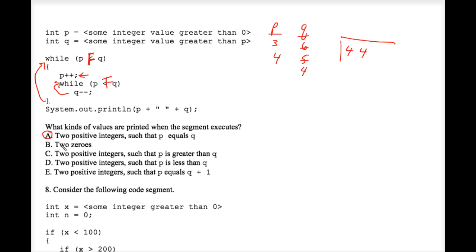p equals q — that's certainly true in this case. They will always be equal in the end because that's what causes the outer loop to stop. Since p goes up one at a time, it won't jump over q — it will land right on q and match. Two zeros is not the answer. p greater than q — no, p was not greater than q. p less than q — no. p equals q plus one — no. A is the final answer.